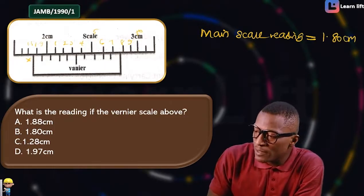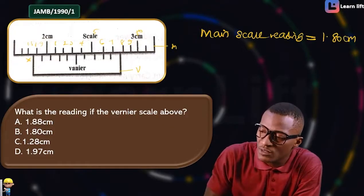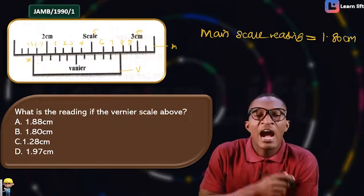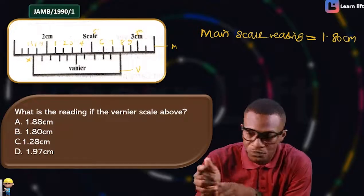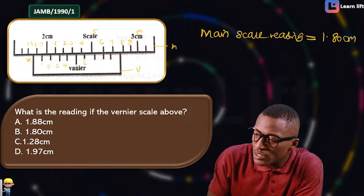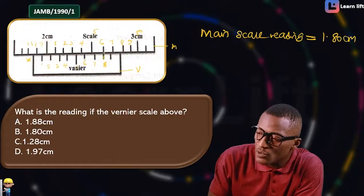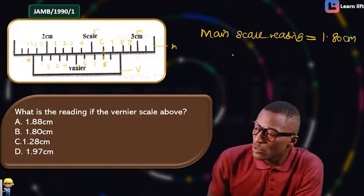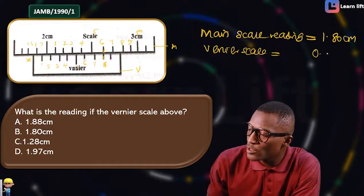This part is called the main scale, and this part is called the vernier scale. Now let's check the vernier scale reading. We read the vernier scale where the main scale line meets with the vernier scale line. Starting from 1, counting: 1, 2, 3, 4, 5, 6, 7, 8 — we stop here because at this point the main scale meets with the vernier scale. So my vernier scale reading is 0.08.